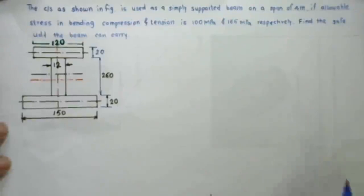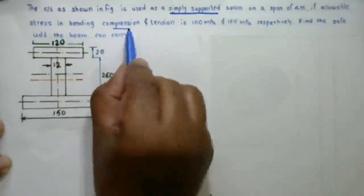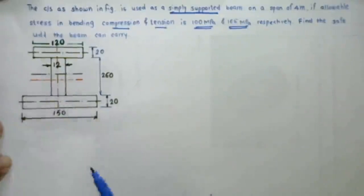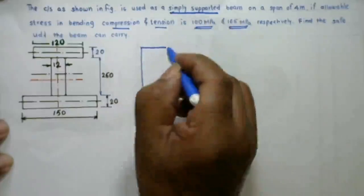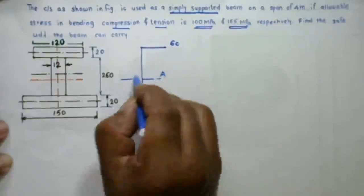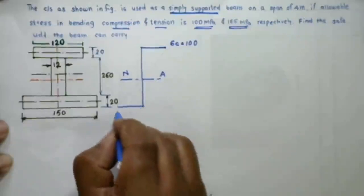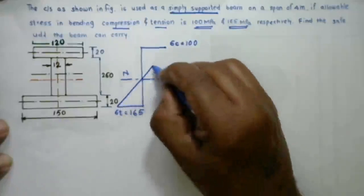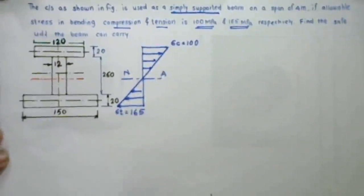In the second numerical, a simply supported beam of span 4 meters is given. The permissible bending stress in compression is 100 MPa and in tension is 165 MPa. The cross section is an unsymmetrical I-section. For this unsymmetrical section, we first plot the stress distribution diagram — compressive stress acts above the neutral axis and tensile stress acts below it.